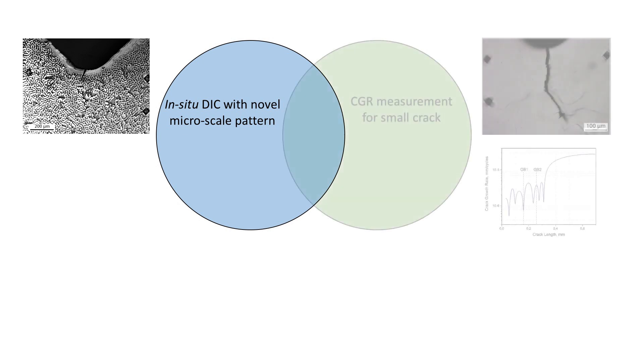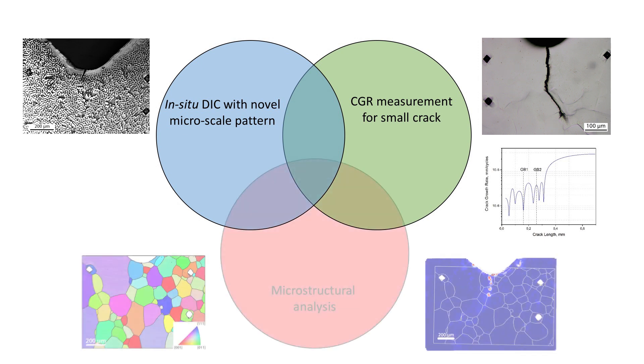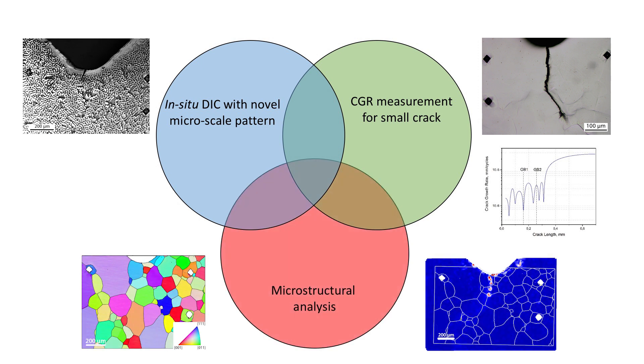Combined with crack growth rate measurement at the same time, the microstructural analysis reveals the impact of shear stress concentrations and grain boundaries on small fatigue crack retardation. We explain the main steps of the measurement procedure and provide a summary discussion of the main findings.